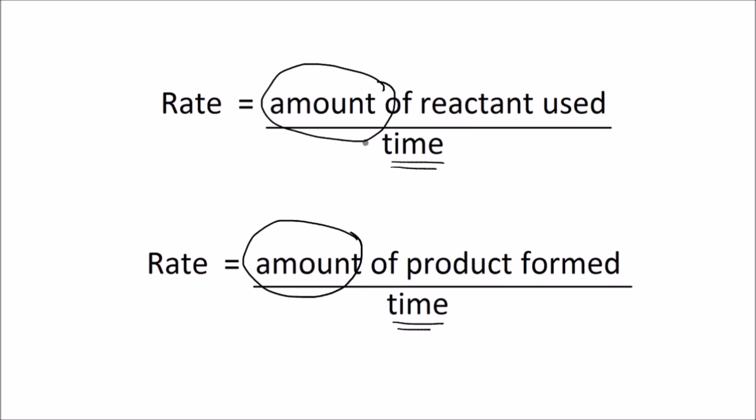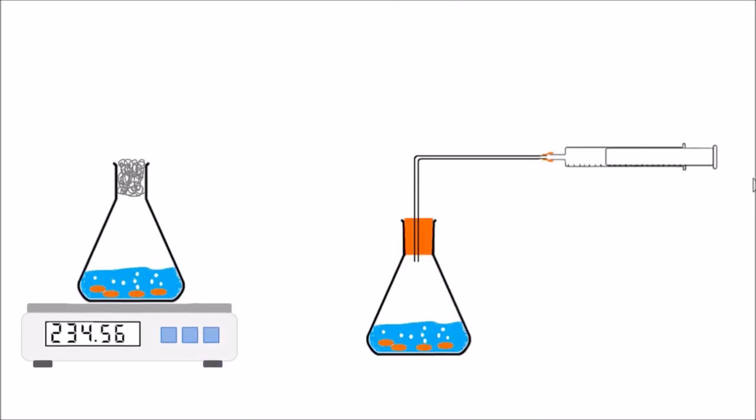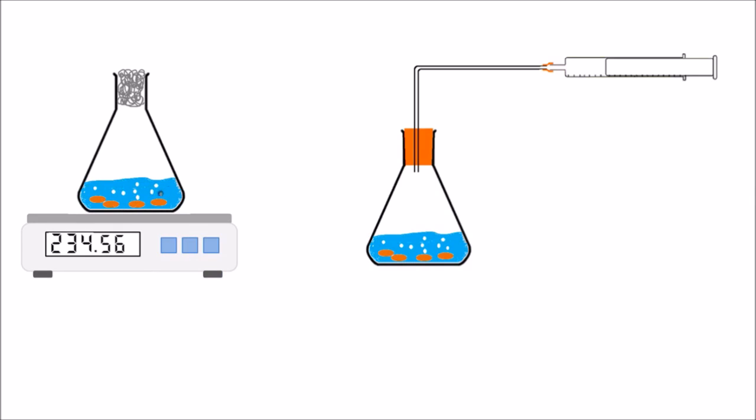So here are two ways that we can measure the amount of reactant or product. Here we have our reaction on the left hand side. In this diagram we have our reaction happening in a conical flask and bubbles are being given off. It's sitting on a scale which can read or measure its mass, and the mass of this flask and its contents is going to change over time because these bubbles are going to rise and escape through this cotton wool at the top of the conical flask. So the mass is going to decrease over time and we can measure the loss in mass at regular time intervals and plot a graph of the loss in mass versus time.